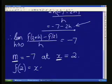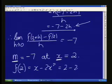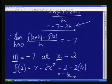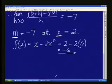So I take my 2 back into my equation x minus 2x squared. It goes in. I get my 2 minus 2 times that 4 and that gives me a minus 6. So I've got enough information for my tangent.